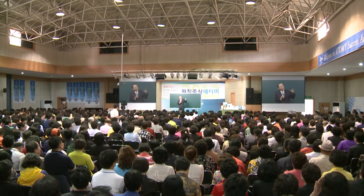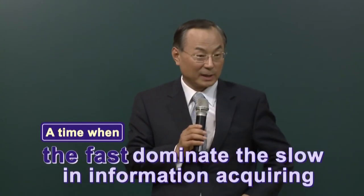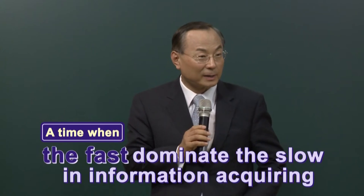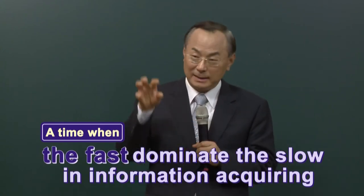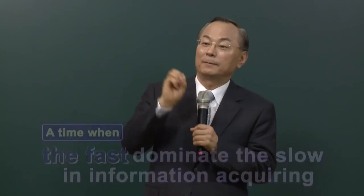In the previous times of the industrial society, those who knew a lot dominated those who knew only a little. In the agricultural times, the powerful controlled the weak. Now we're living in a time where the fast dominate the slow. It's a time when winners find information in a more timely fashion than others to rule the world.